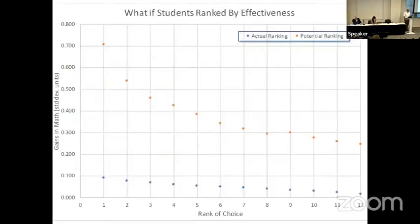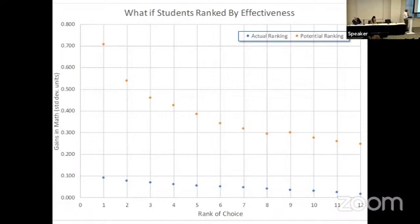The reason you might be excited about recommendation engines is this figure. On the y-axis are gains in math, in standard deviation units — the black-white achievement gap in New York City is about 0.8 standard deviations for reference. Relative to a kid's actual first choice, their predicted math effects would increase by 0.1 standard deviations if they attended that school. But if I whispered in their ear using a Netflix recommendation engine — 'apply to the school where you're going to learn the most' — the average achievement gain would be 0.7 standard deviations. That's gigantic, and you see a similar gap for the second choice, third choice, and so on.